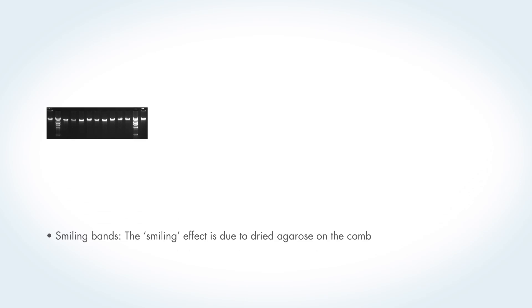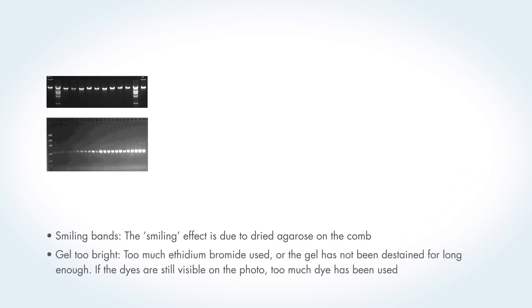Now let's take a look at some other common effects in electrophoresis and their causes. If bands have an uneven appearance, the so-called smiling effect, this is due to dried agarose on the comb. If the photo of the gel appears too bright, then too much ethidium bromide has been added to the gel, or the gel has not destained for long enough.